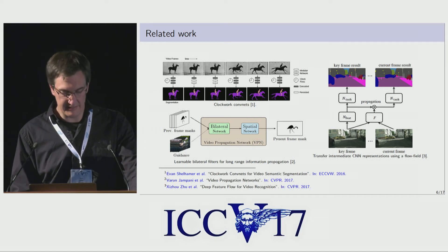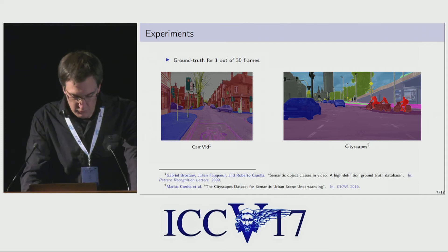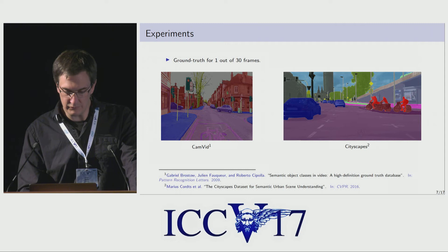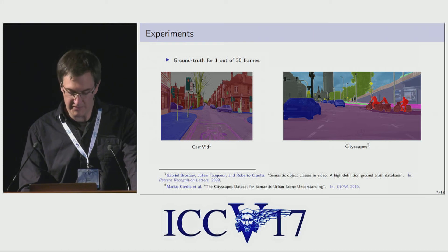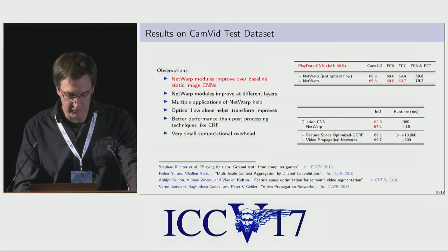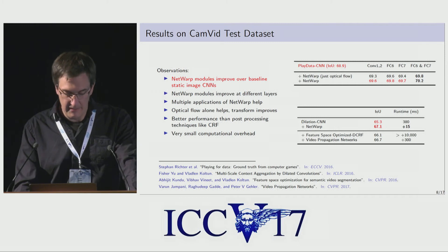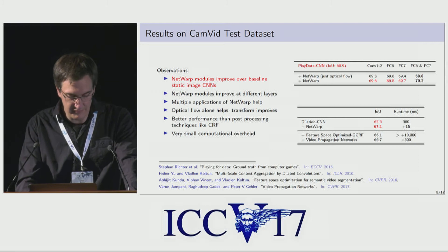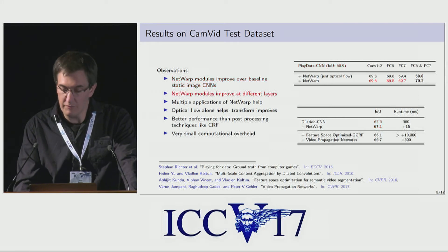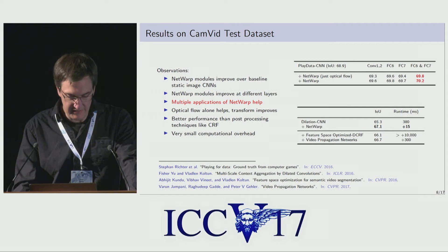Through our datasets and CNN architectures, we always found NetWarp to increase segmentation performance. We have results for the two most prominent video datasets, CamVid and Cityscapes, for which ground truth is available for one out of 30 frames. Intersection over union and its variants are the standard metrics used. We use NetWarp to augment several existing state-of-the-art CNNs and observe improvements across all of them. Adding a single NetWarp module to the state-of-the-art Richter et al. dilation CNN immediately improves performance over the baseline, irrespective of which layer depth it is applied at, though it is usually applied at higher layers.